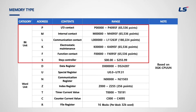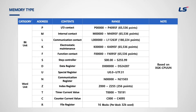If it is a bit unit, the last number is to express a bit address. However, if it is a word unit, the last number is not a bit. Of course, even if it is a word unit, it can express a bit address using a period. Let's see how all data memory are different.